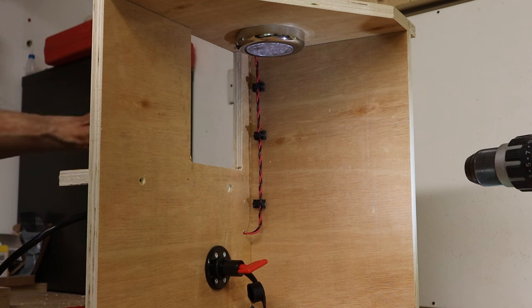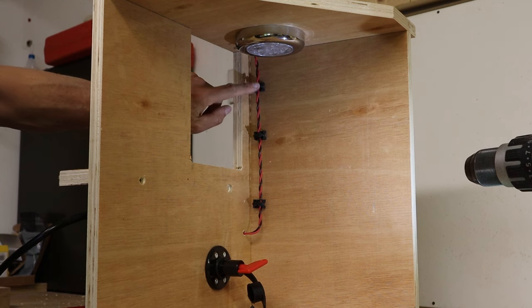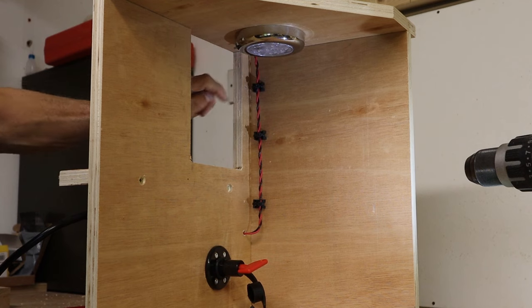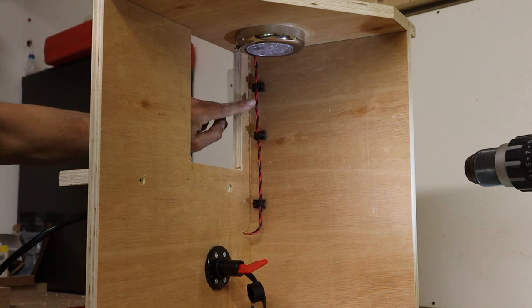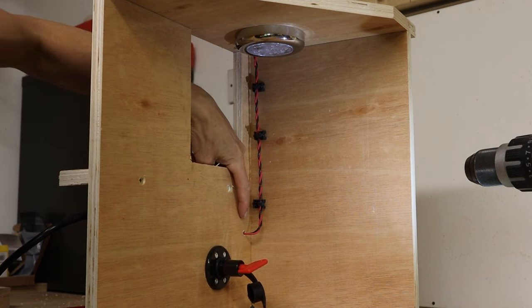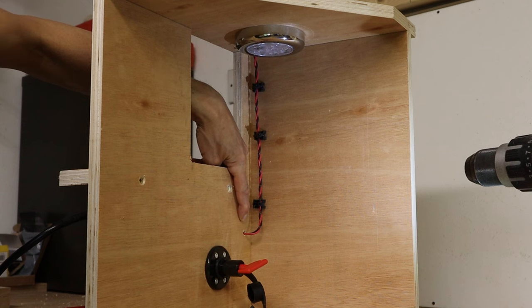So in the end I actually moved these clips onto this bulkhead for neatness. So the wires come from the lamp, up through the ceiling, back down through a hole and disappear through this hole in this bulkhead into the engine bay area.